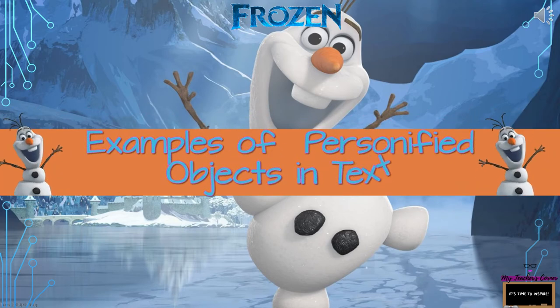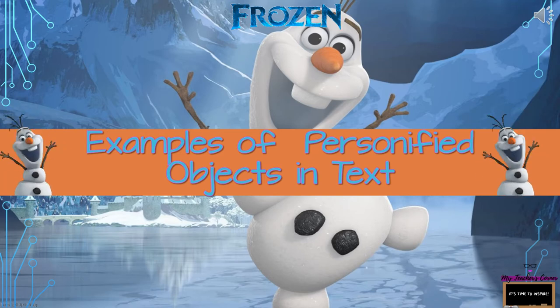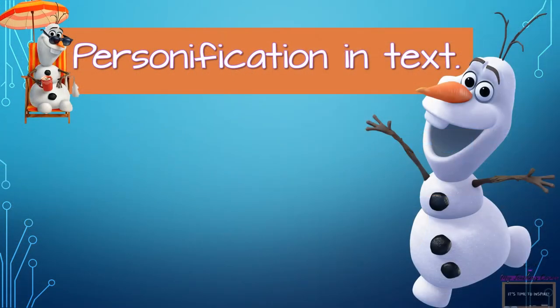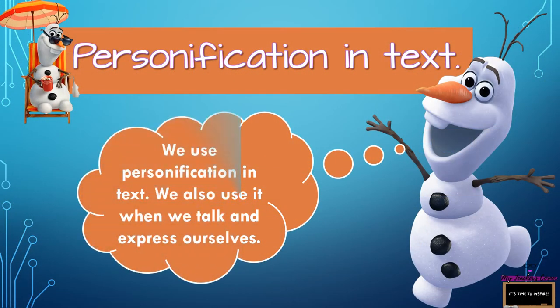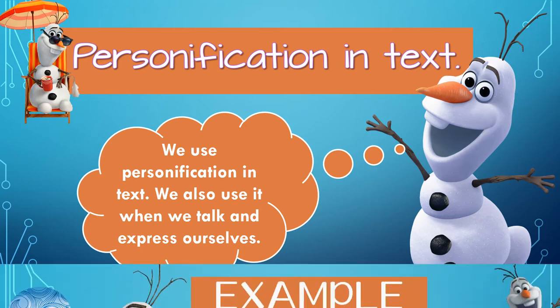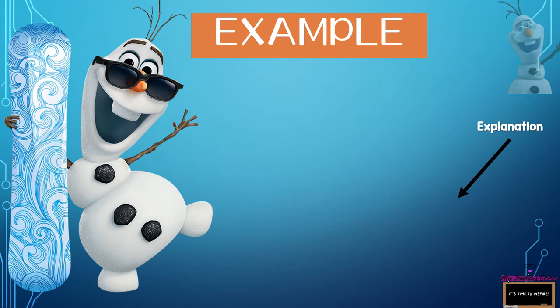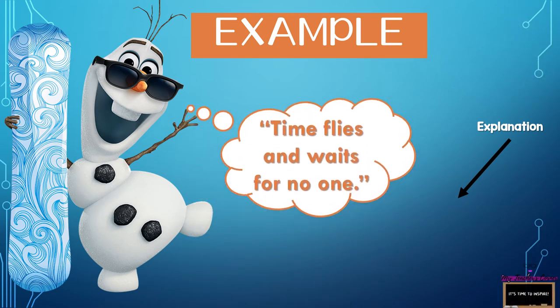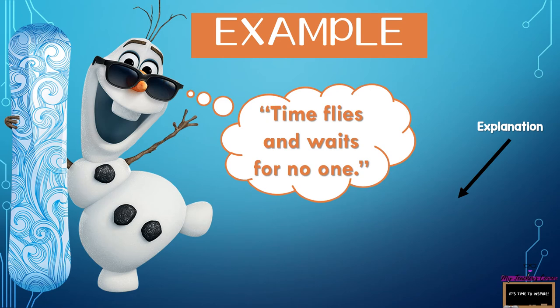Let's look at some examples of objects in text. We just looked at objects in cartoons; now let's look at them in various texts. We use personification in text, and we also use it when we talk and express ourselves. Example number one: 'Time flies and waits on no man.'